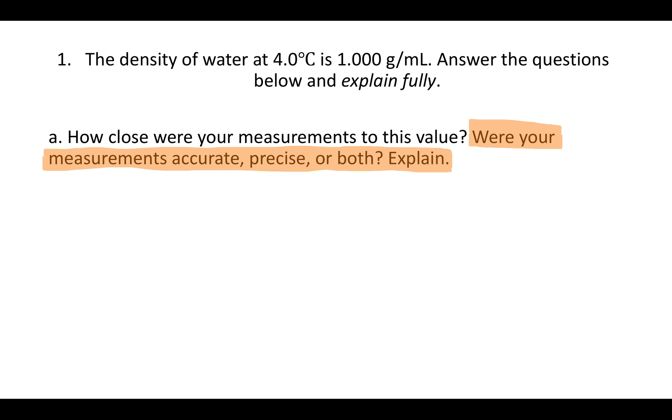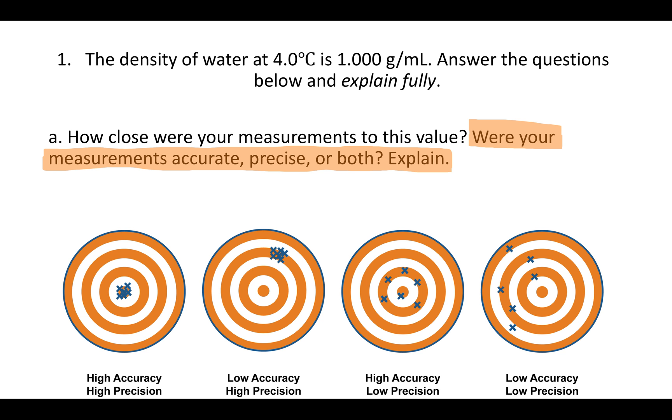The second part of this question is were your measurements accurate, precise, or both? And explain. Remember that measurements are accurate if they're close to the accepted value. In this case, the accepted value is 1.000 grams per milliliter. So if you were close to that, let's say within 10 percent error, then they'd be accurate.